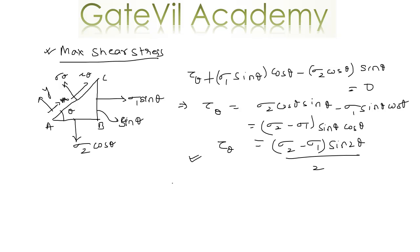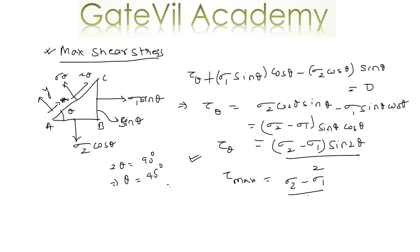So we have the expression for tau theta when theta is the inclination to the principal axis — specifically the minor principal axis. This tau theta will be maximum when sine 2 theta equals 1, that means 2 theta equals 90 degrees, which implies theta equals 45 degrees. So the maximum shear stress occurs at an angle of 45 degrees to the principal axis. And the value of tau max will be sigma 2 minus sigma 1, divided by 2.